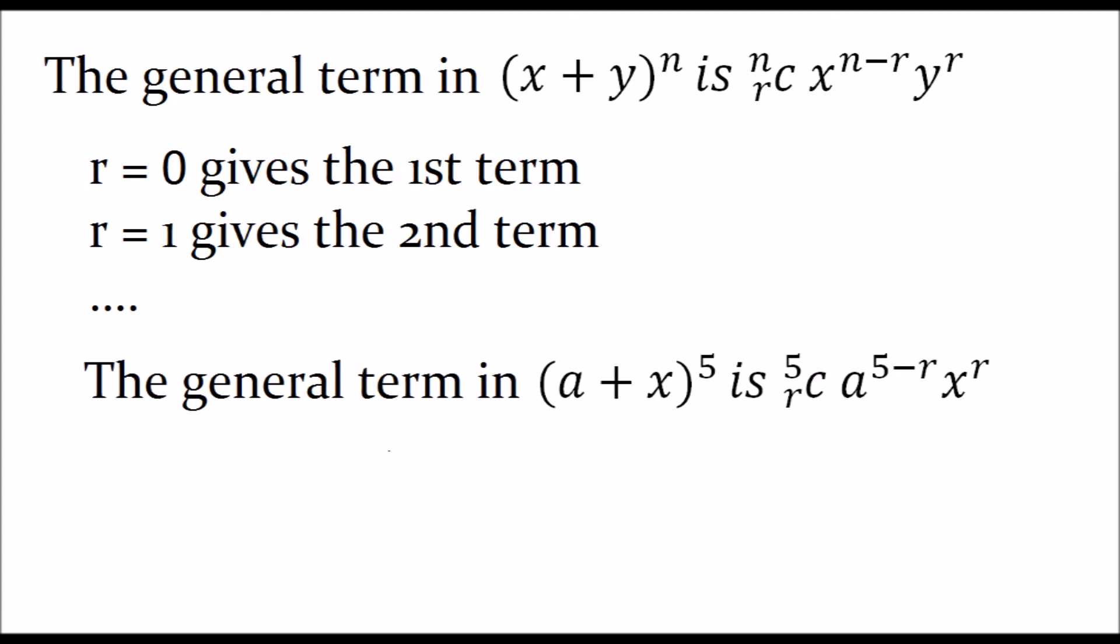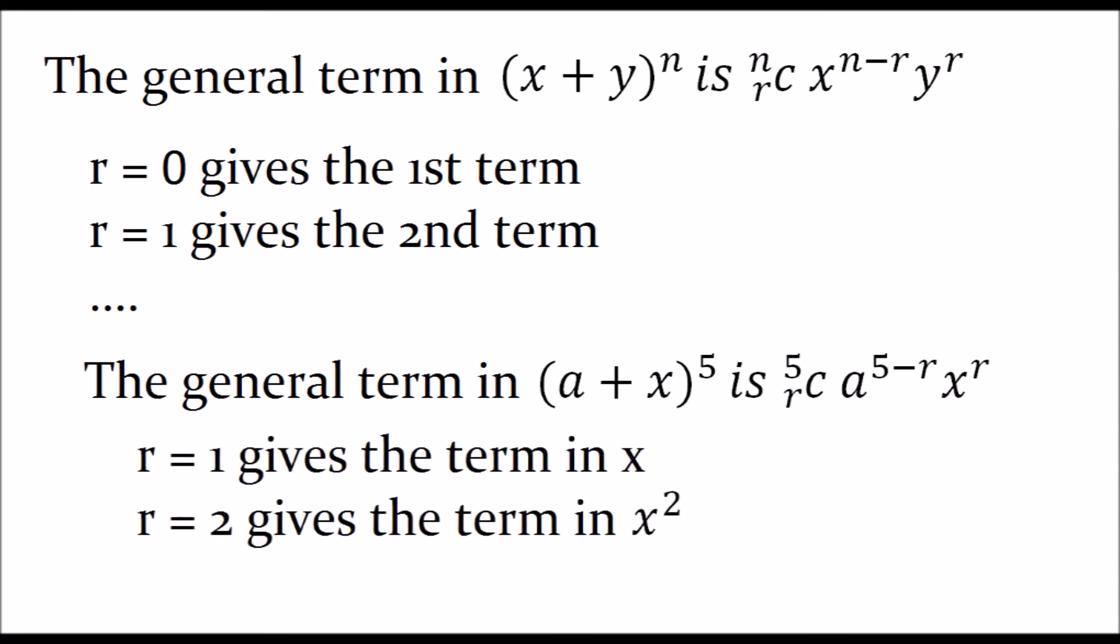So the general term in the expansion of (a+x) to the power five is 5Cr times a to the power of five minus r times x to the power r. In this case n is equal to five, this is the same thing just using the formula.